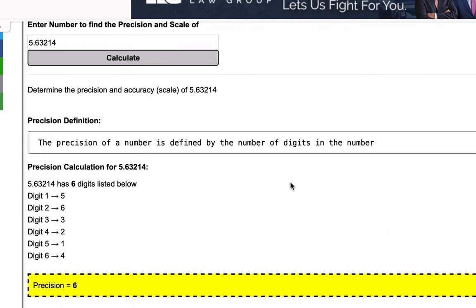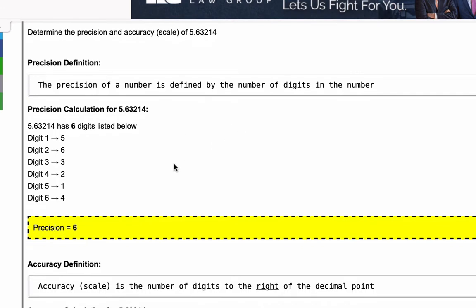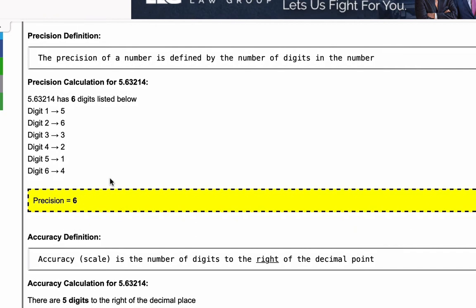So first we're going to walk through the definition of precision. The precision of a number is defined by the number of digits in the number and next we'll walk through the precision calculation for the number that you enter. In this case 5.63214 has six digits which we've listed all out here. Therefore the precision of that number is six.